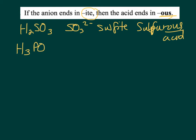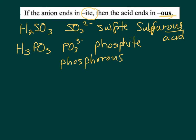H3PO3, the anion is PO3 3- and that's called phosphite. It ends in -ite, so the acid ends in -ous. This is called phosphorous acid.